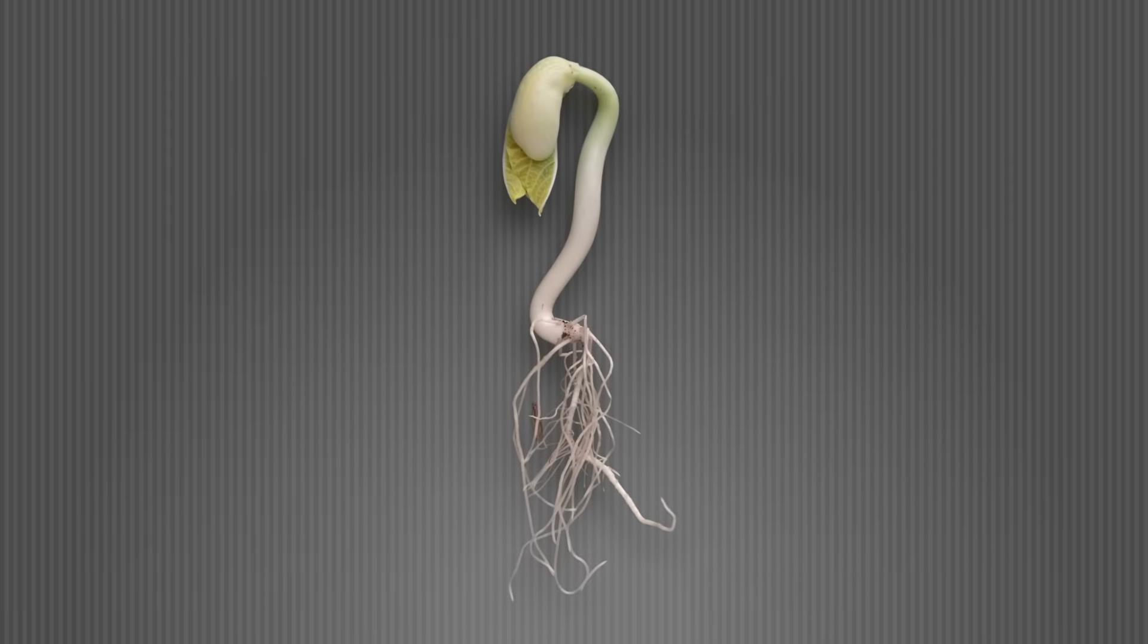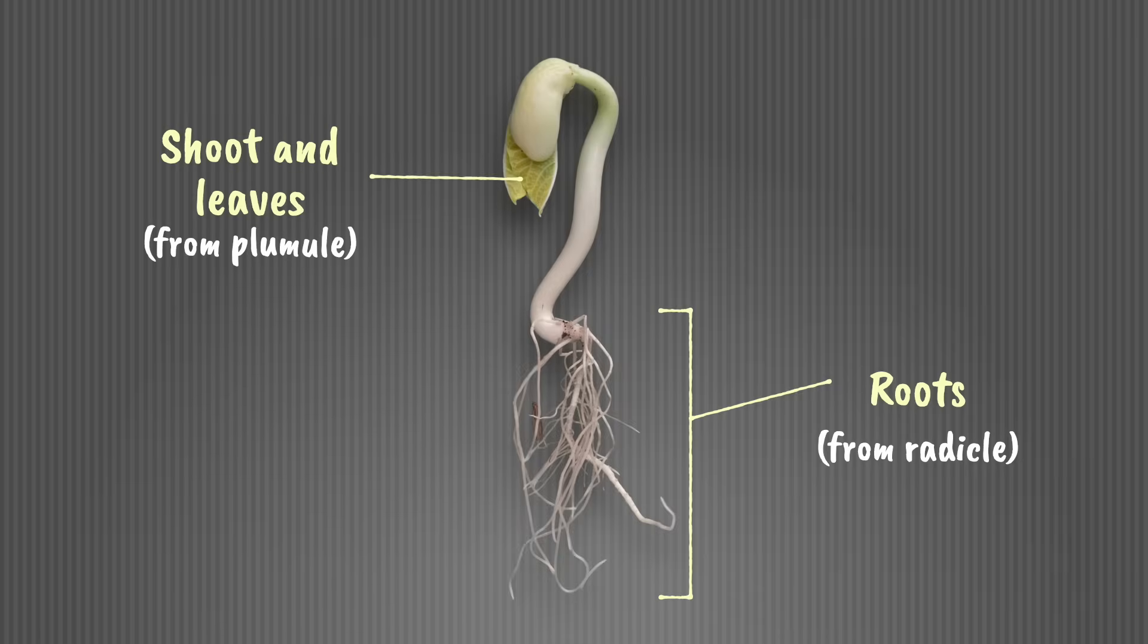As germination progresses you can see a root system become established and the first shoot and leaves developing from what was the plumule.